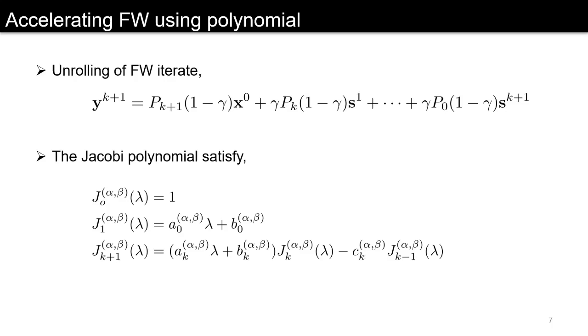And J_(k+1)(λ) can be recursively written as (a_k λ + b_k)J_k(λ) - c_k J_(k-1)(λ), where the coefficients a, b, c can be found using the tunable parameters α, β and the iterate k.